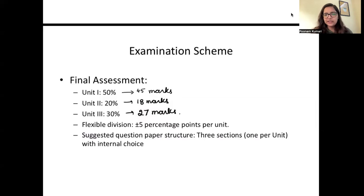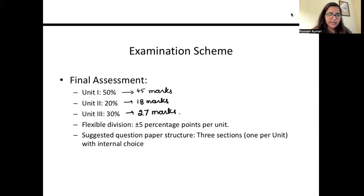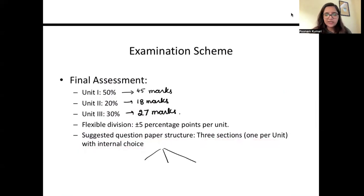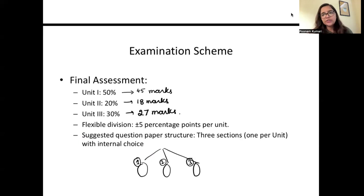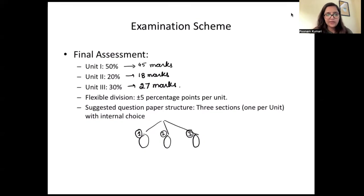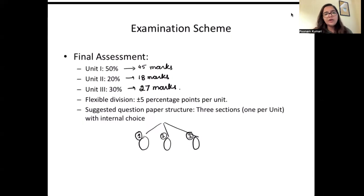Breaking down the marks: unit one is approximately 45 marks, unit two is 18 marks, and unit three is 27 marks. There may be a plus or minus 5% weightage within a unit in the actual exam. The suggested paper structure has three sections — one per unit — with internal choices. Three sections correspond to the three units, with internal choices within them. This scheme is the same for honors, major, and minor students.